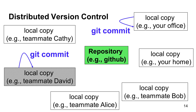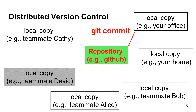You have made some changes to the files in your office computer. David also made some changes. Both you and David do git commit to take snapshots of the changes. Please remember that you need to do git commit often. If you do not do git commit, version control does not help you. David has not done git push. Thus, the changes he has made are visible to him only. The other people cannot see his changes.